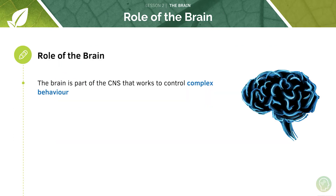What is the purpose of the brain? The brain is part of the CNS and it works to control complex behaviour. Remember from the previous tutorial on the nervous system that the CNS is composed of the spinal cord and the brain, and it's often involved in complex behaviour. Reflexes are an unconscious process, so they do not go up to the brain.